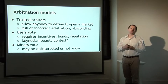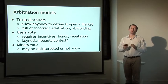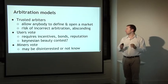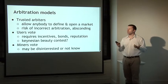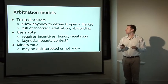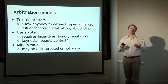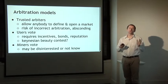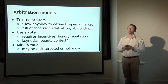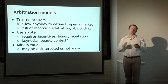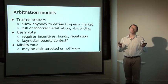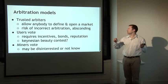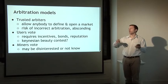So how can we do arbitration — assert who actually won so that people can redeem their winning shares? The simplest model is to have trusted arbiters. Anybody who wants to can define and open a new market, stand up and say they're opening a market on the World Cup, and they will decide who won in the end. If you trust them you accept their signature as the correct outcome. They would build up a reputation over time with an incentive to arbitrate correctly, but there's always the risk that they could abscond.